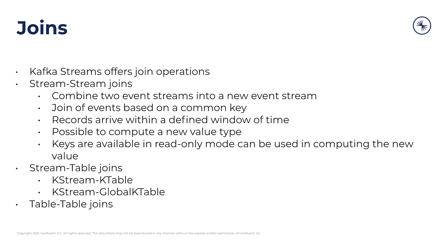Kafka Streams offers three types of joins. First, there is the stream-stream join. In this case, you would have two event streams being joined into a new event stream. A stream-stream join is what's called a windowed join — the records that arrive are joined with other records of that same key within a defined window of time. A record comes in from the left side and will be joined only with records from the right side if they are within this defined window of time, either in the forward direction or in the back. All this data is stored in a local state store to keep track of what data has arrived during this time.